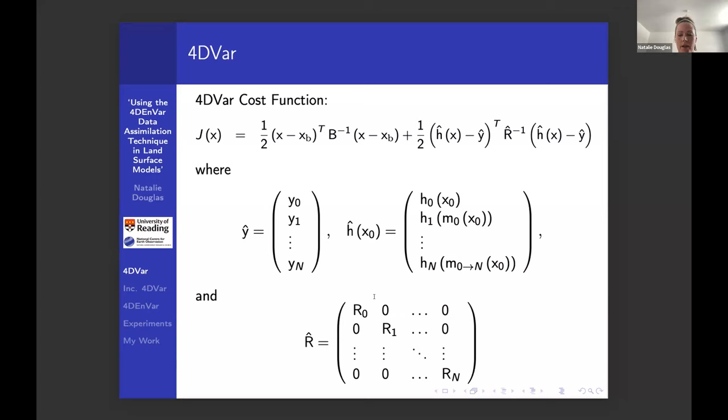You would use your observation operator to take that to observation space. Similarly, R hat is just a compact form for the error covariance observation error covariance matrices each time. If you have no covariances between your observations, this is ultimately just a diagonal matrix.